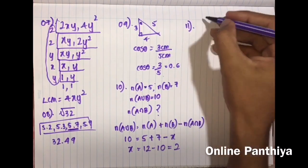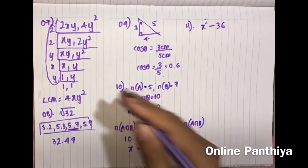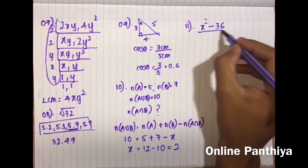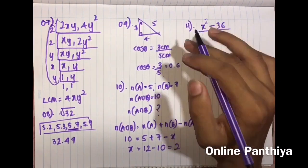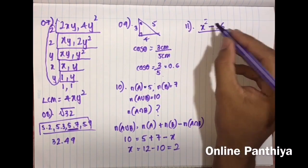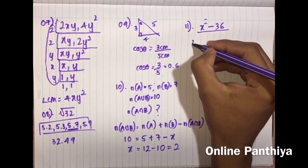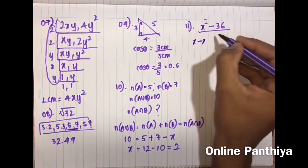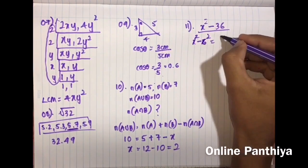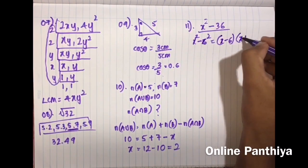Question 11: Factorize the expression. This is based on the difference of two squares — a Grade 10 topic covered in another video. You write the term as 6 squared and factorize it as (x − 6)(x + 6).